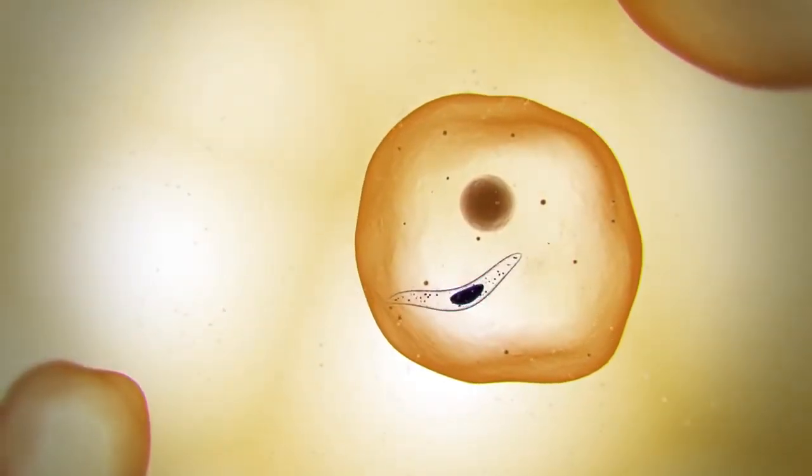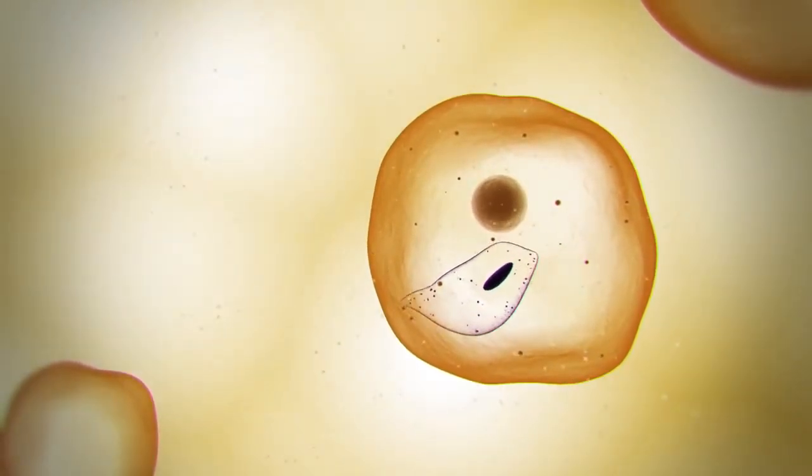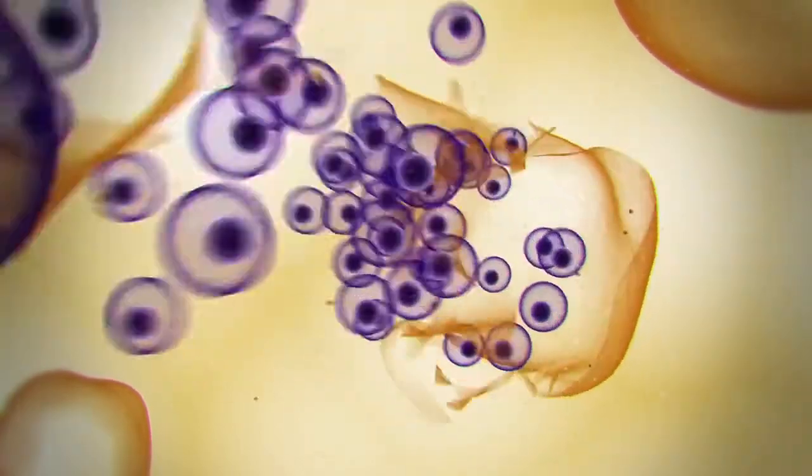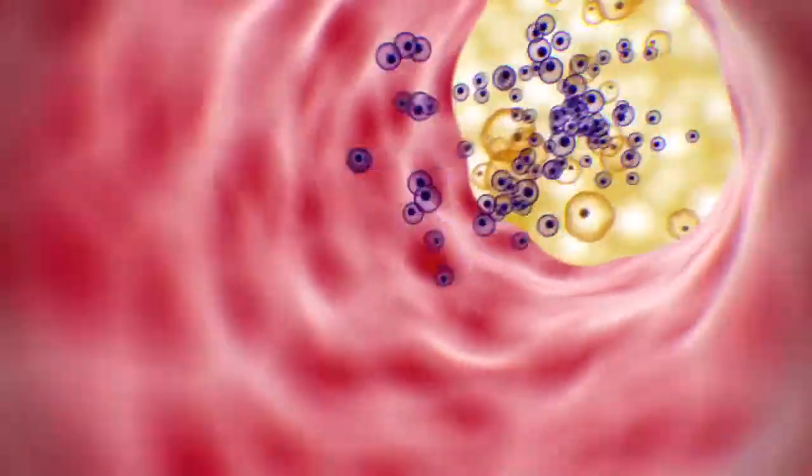The parasite develops into mature schizonts, creating tens of thousands of merozoites, which burst out of the cell and journey back toward the bloodstream.